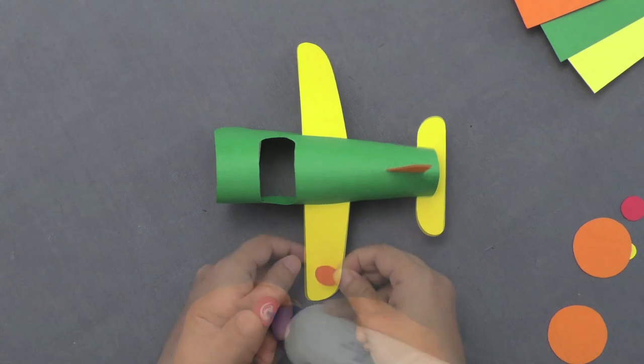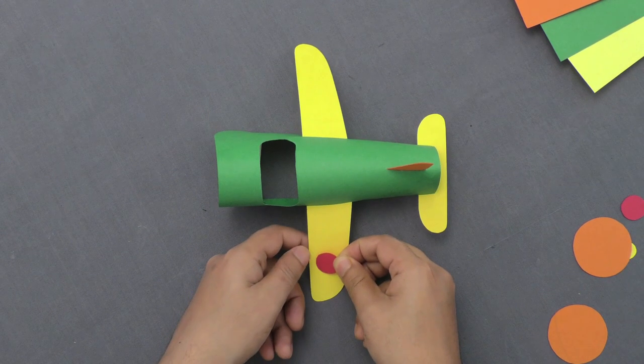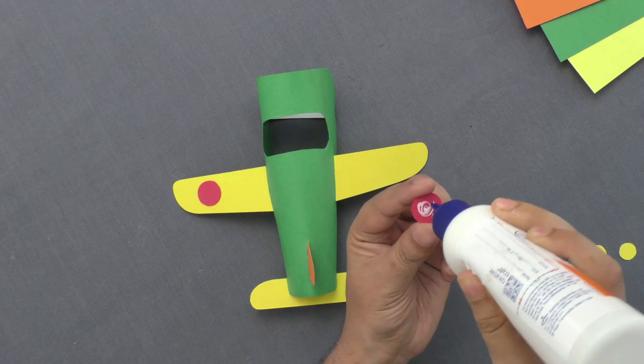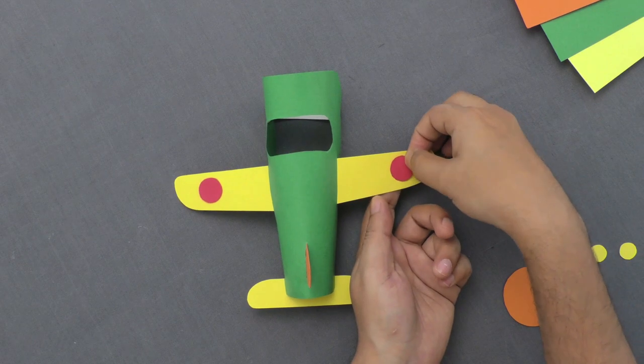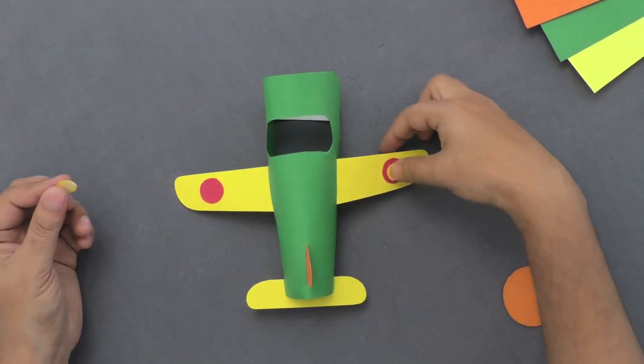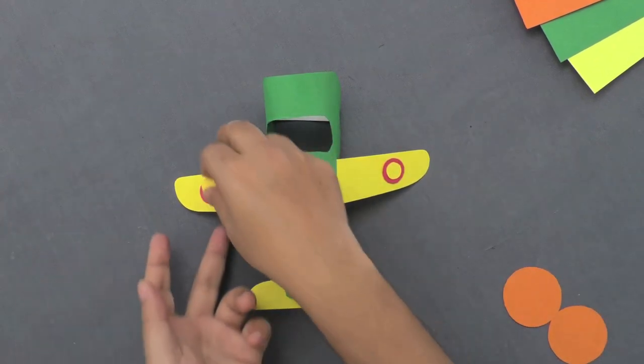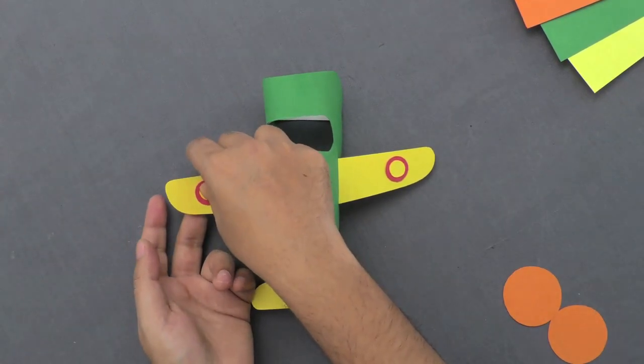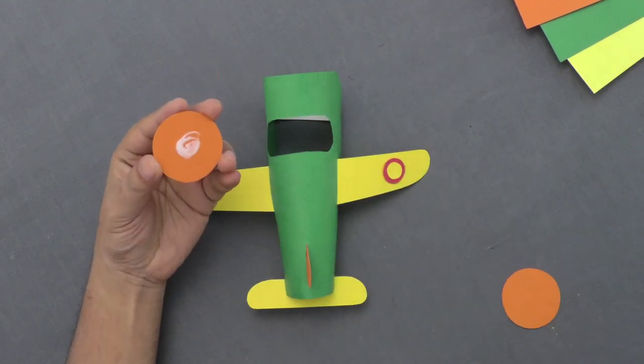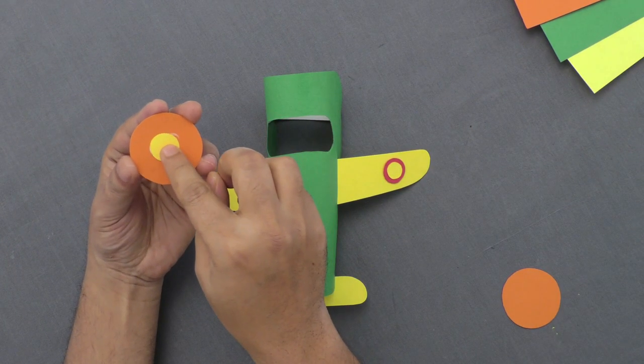Apply some adhesive now and paste the wing markers on the wing edges. Similarly, apply adhesive and paste the landing wheels on the sides.